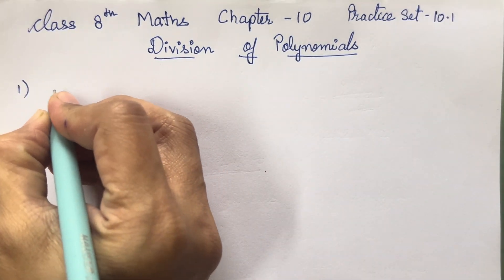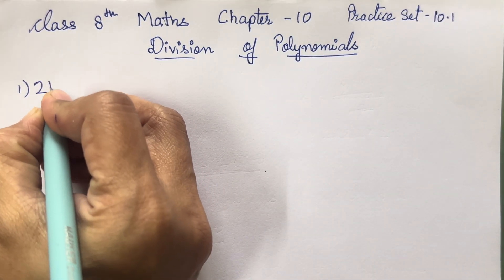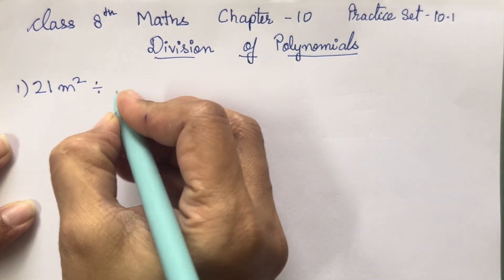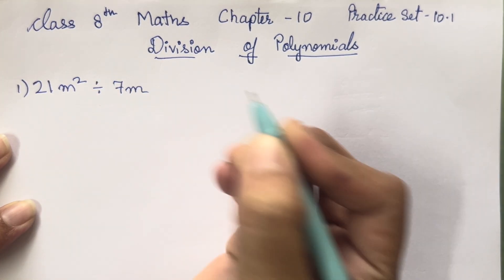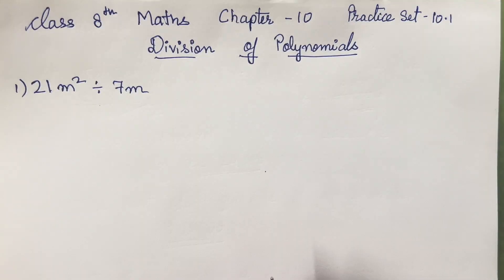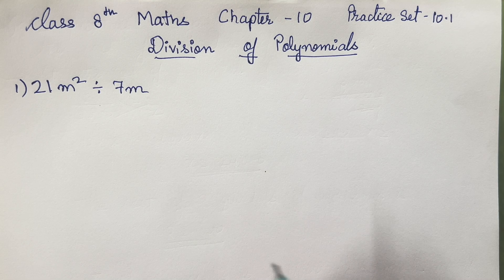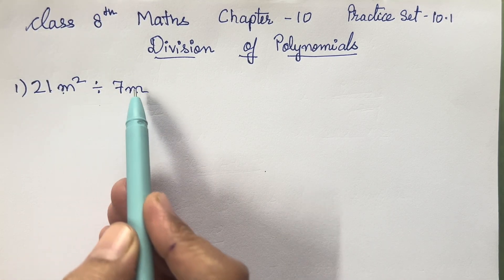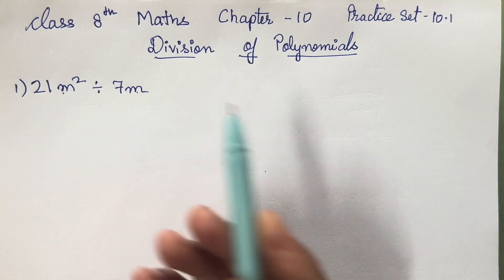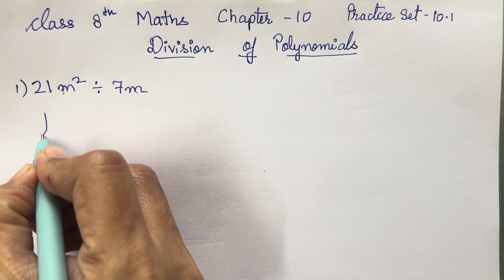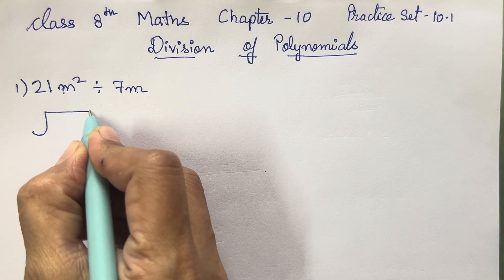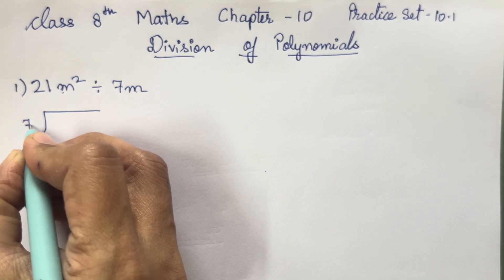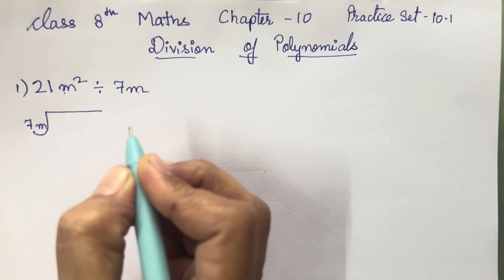Now these sums are exactly simple division. You all have to carry forward in order to get the answer. The only difference is there are variables here. So how are you going to divide this? It is very easy — simple methods I am going to show you. 7m will come over here.